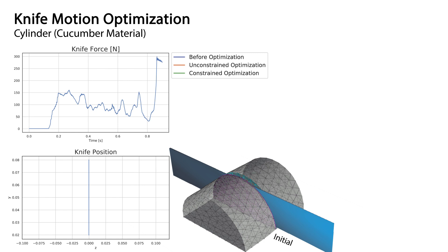Studies have shown that humans perform sawing motions when cutting biomaterials in order to reduce the required force. As we will see, such behavior emerges when we use constrained trajectory optimization.